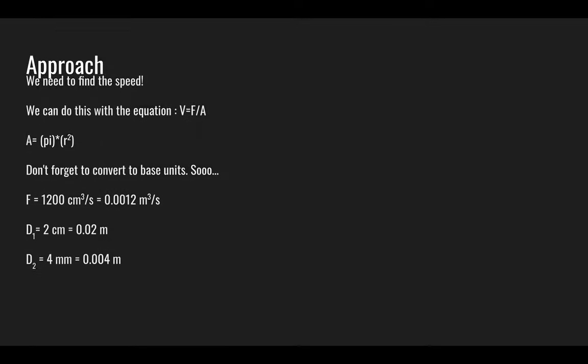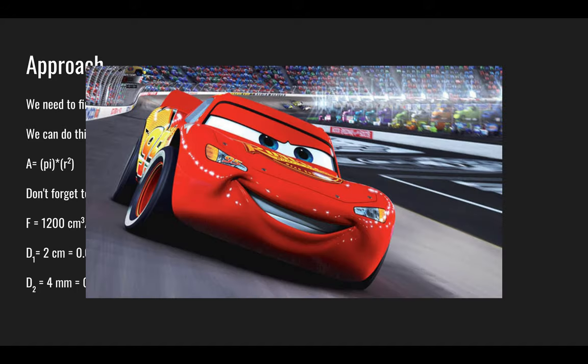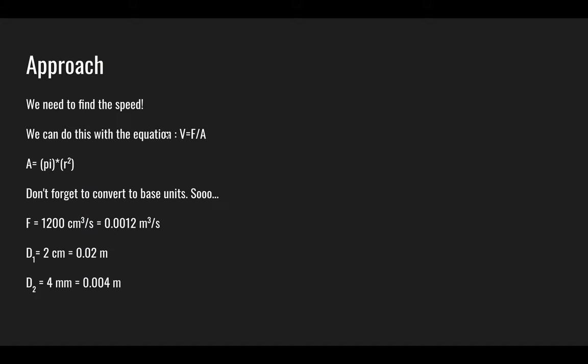So for the approach, basically the first step is to find the speed. We need to find the velocity that the air is traveling at. We need to find how fast it's going. So we can do that with the equation. Velocity is equal to flow rate divided by area. And like I said, area is equal to pi times the radius squared.